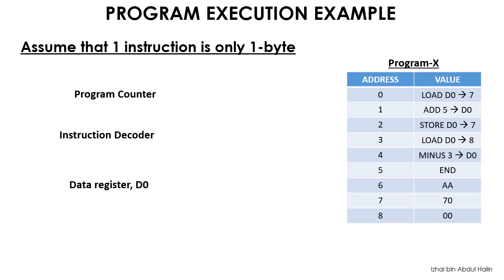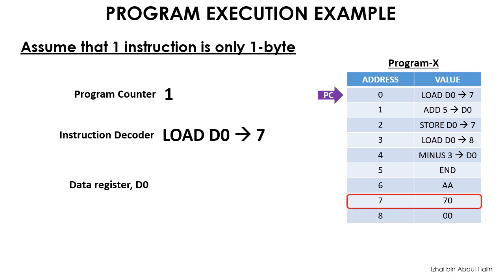Once program execution commences, the first address of the instruction is loaded into the program counter. Its value is 0. This value is put onto the address bus, shown as the purple arrow here, pointing to address 0. The data bus is loaded with the instruction "load d0 with the data from address 7". This instruction is sent to the instruction decoder and the program counter's value is incremented to 1. This concludes the first fetch cycle. For the execute cycle, the instruction is decoded by the instruction decoder, then executed by the CPU by fetching the data at address 7, loading it onto the data bus and sending it to register d0. D0 now contains the value 70. This concludes the first execute cycle.